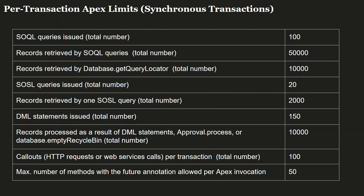You should be aware of what the governor limit is for a particular transaction, because many times we face exceptions like the 101 error. For example, if you are querying data inside a for loop and that loop runs more than 100 times, you will face the SOQL 101 error. This topic is also commonly asked in interview questions, such as what is the governance limit and how many rows can be retrieved in a single SOQL transaction.